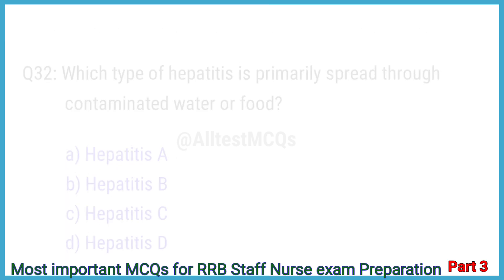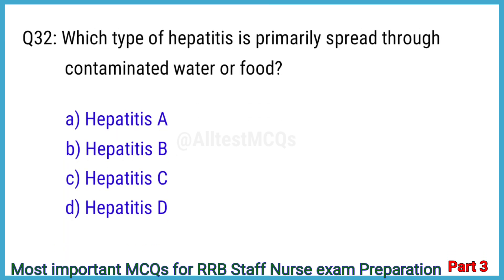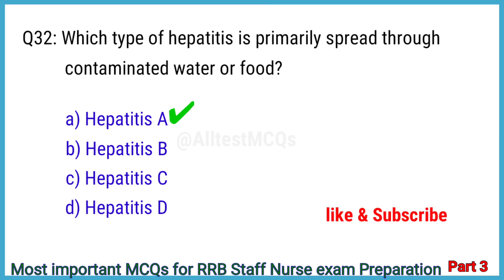Question No. 32. Which type of hepatitis is primarily spread through contaminated water or food? The right answer is Option A: Hepatitis A.